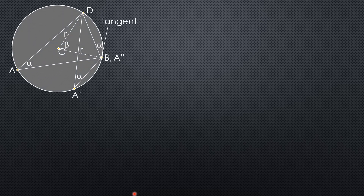For the first case, let's consider point A. As mentioned earlier, let us show that alpha is one half of the corresponding central angle, or one half the measure of its subtended arc. So, alpha equals one half of beta. First, let's draw a line from point A to point C, which is the center of the circle. Therefore, AC is the radius.